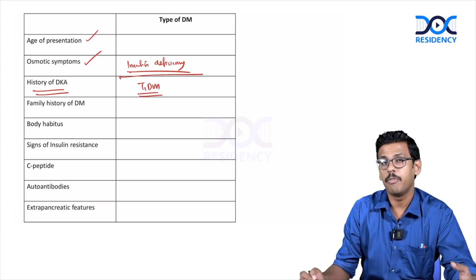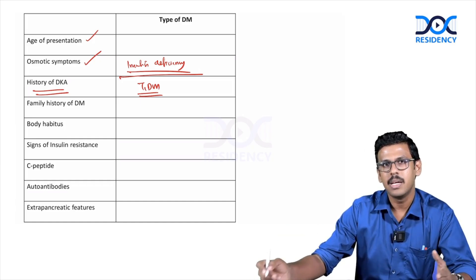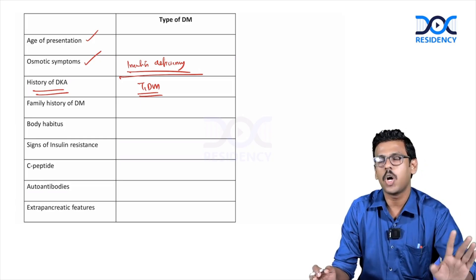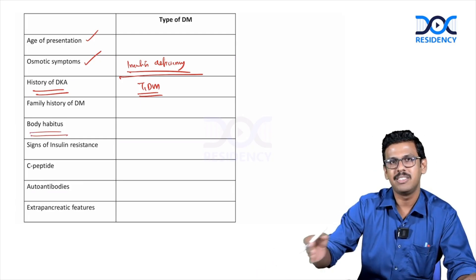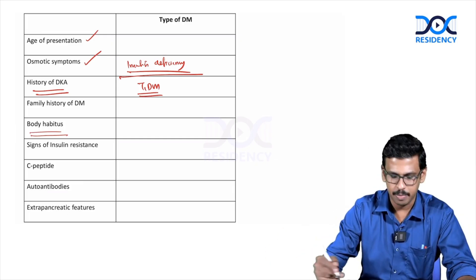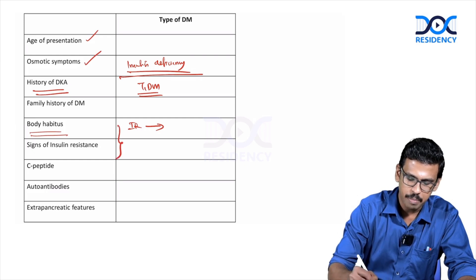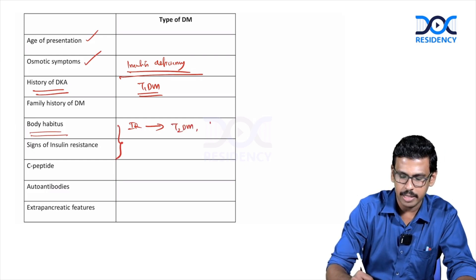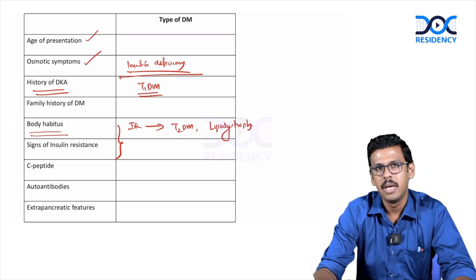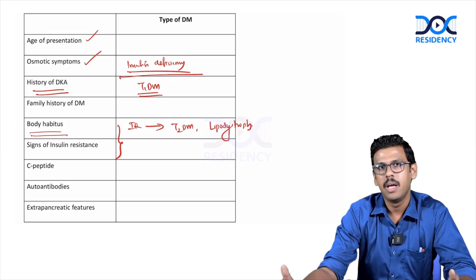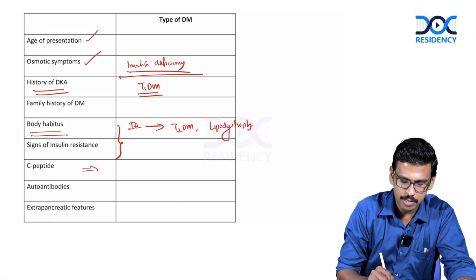Family history of diabetes can be seen in both type 2 and monogenic diabetes, and is less common in type 1. Body habitus is also important: features of insulin resistance and obesity may be seen in type 2 diabetes and lipodystrophy, whereas lean individuals without features of insulin resistance are seen in type 1 diabetes, MODY, and pancreatic diabetes.